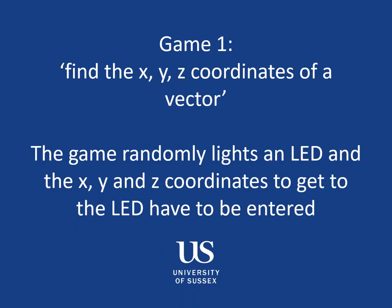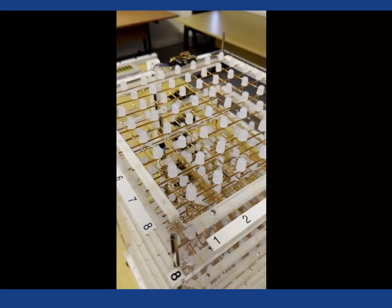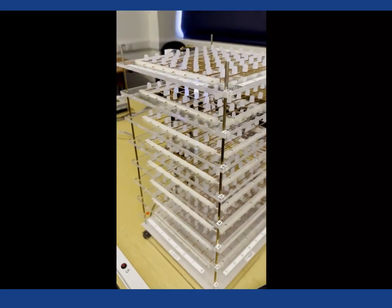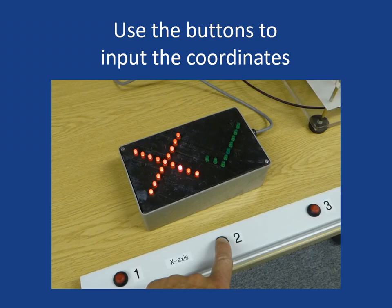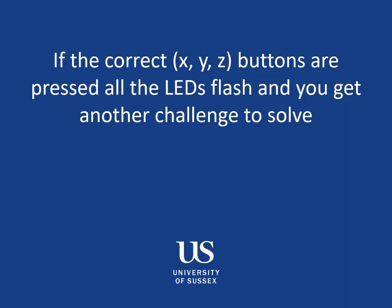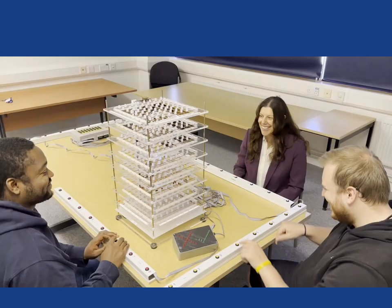In the first game then it's all about finding the x, y, and z coordinates of a vector. The game randomly lights an LED and the participants have to work out the x, y, and z coordinates to win the game. So here's set up on game one. The LED is flashing. You can think of the vector as going from the origin to that flashing LED. And the participants use the buttons to put in the x, y, and z coordinates. If they get it right they've got a flash of LEDs and it will move on to another randomly generated LED. So here's it in action.